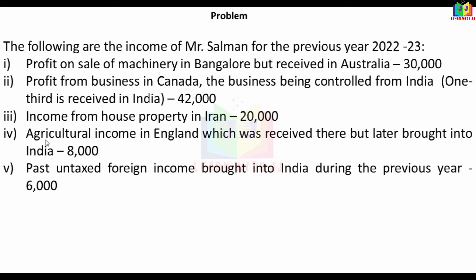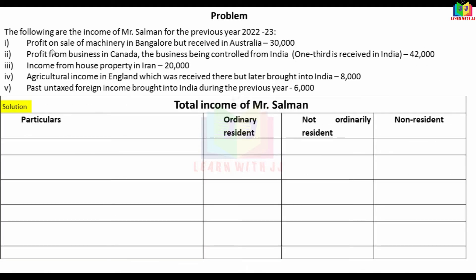Agricultural income in England, which was received there but later brought into India — this is foreign income. The profit on sale is Indian income; this is taxable: 30,000.